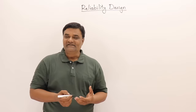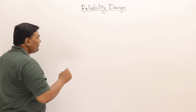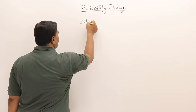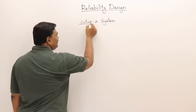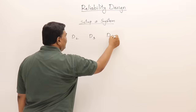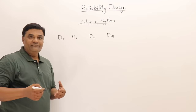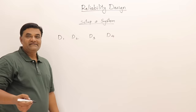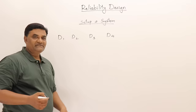First, let us understand what the problem is. We have to set up a system consisting of some devices — let's say D1, D2, D3, D4. For example, to set up a studio, I need a board, a camera, batteries, lights, and markers. We call these devices.